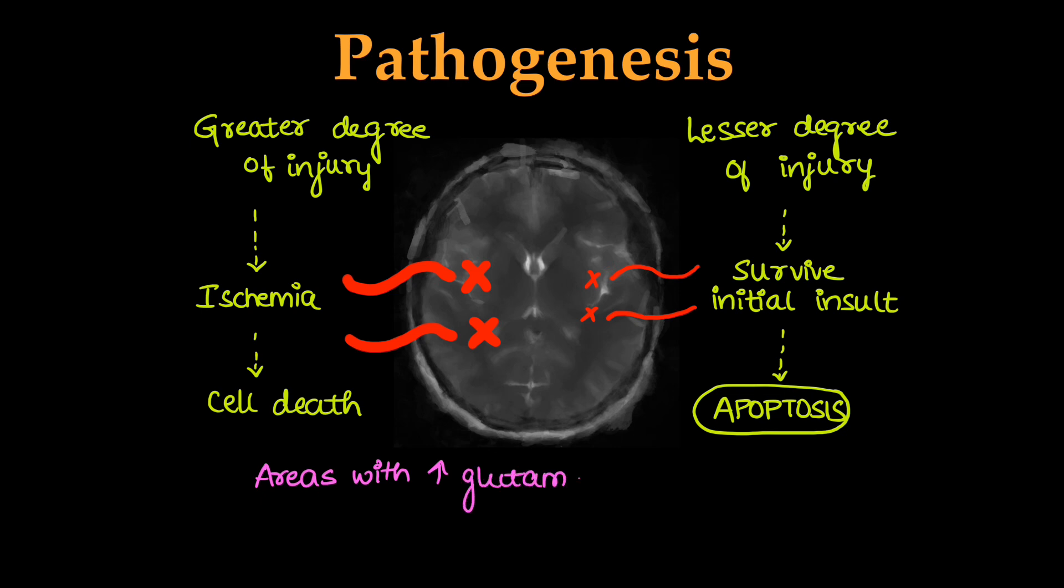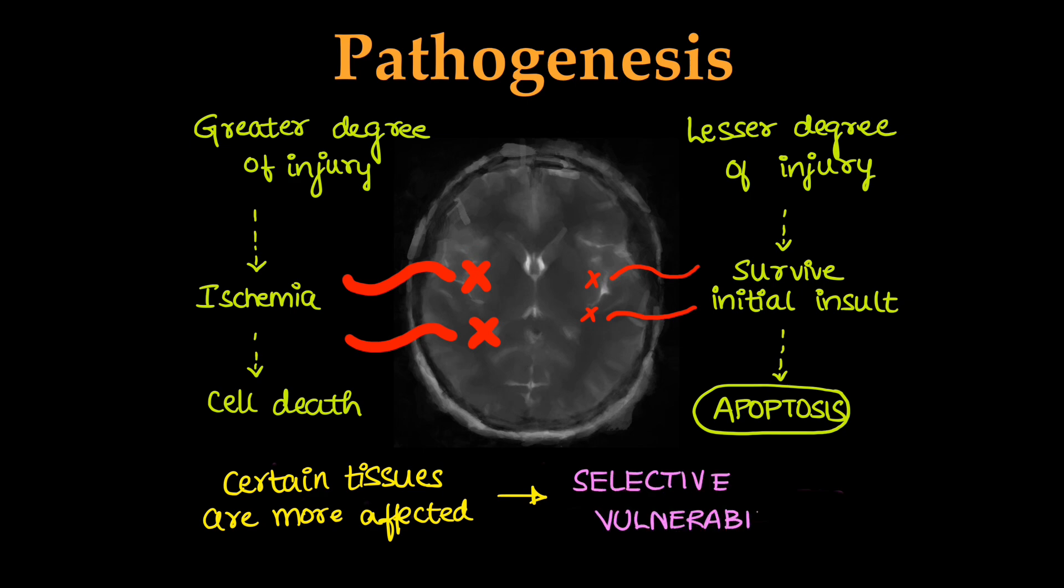Areas with greater glutamate content will undergo greater damage, like grey matter. Areas with more energy demand, more metabolism, or myelination will undergo greater damage. This means certain tissues are more affected to vascular insult. This is known as selective vulnerability of the tissues.